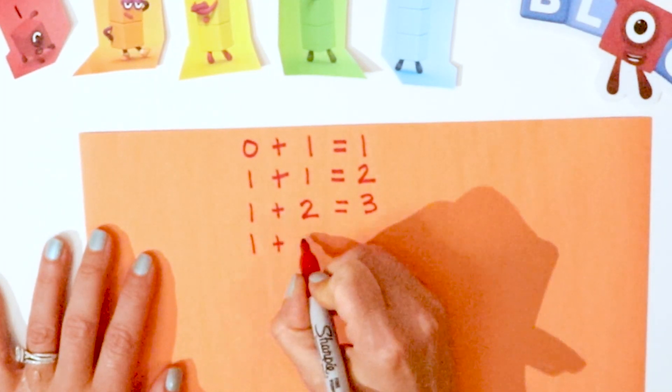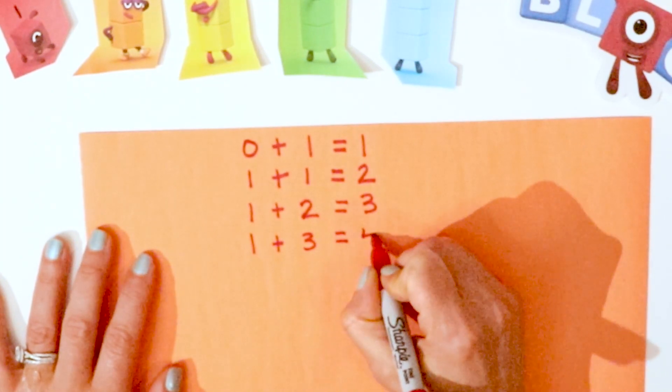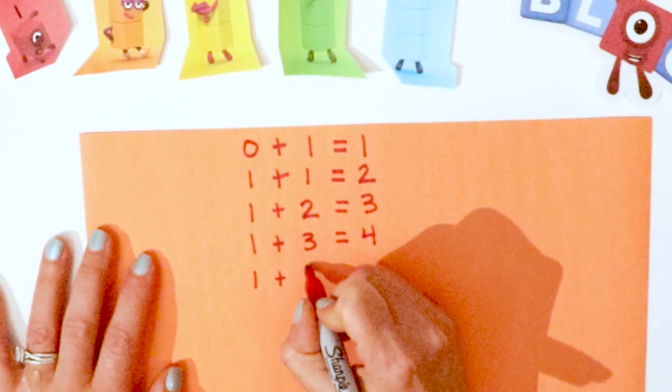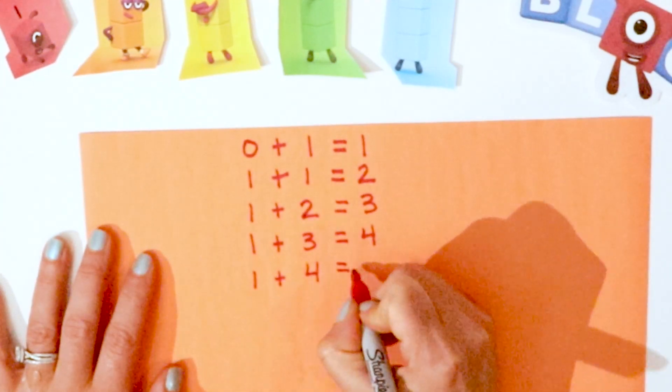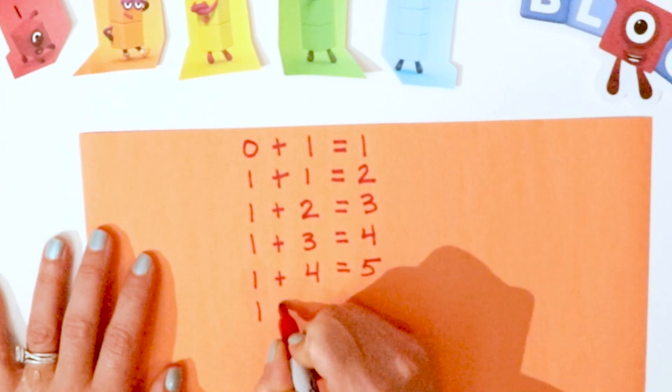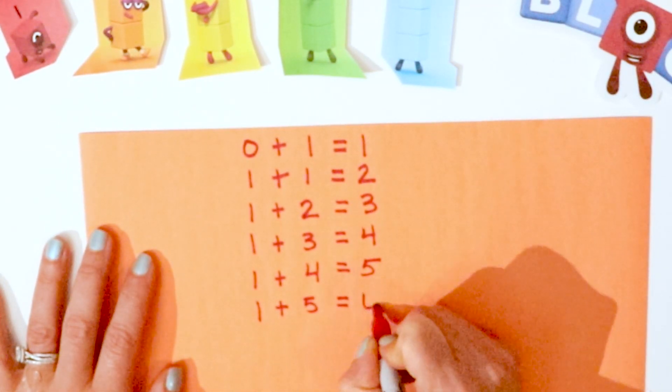One plus three equals four. One plus four equals five. One plus five equals six.